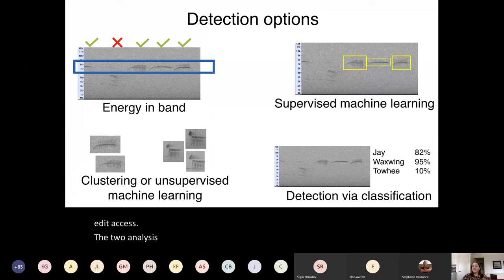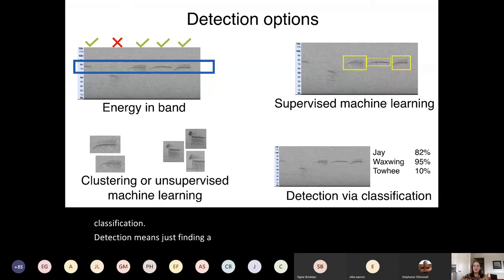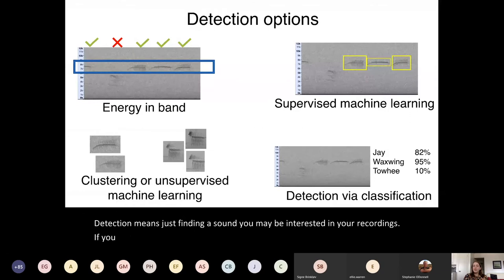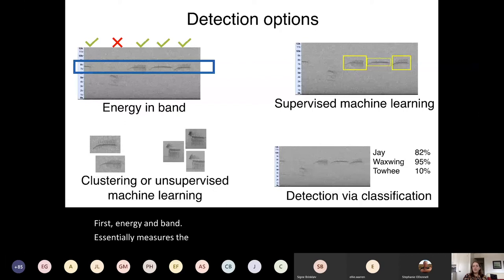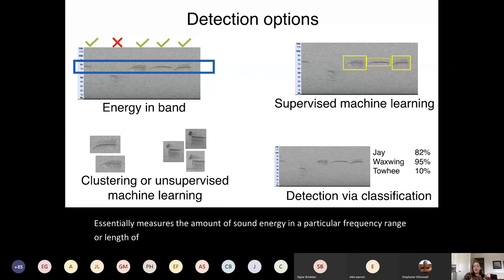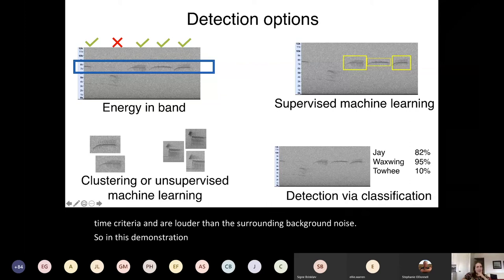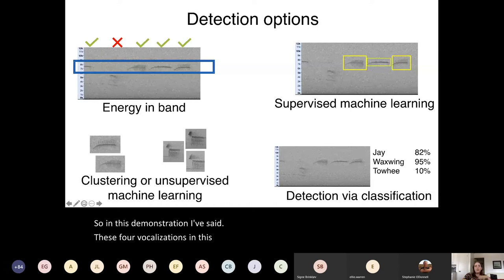The two analysis tasks people ask about most are detection and classification. Detection means finding a sound you may be interested in within your recordings. If you implemented auto-triggering, your detection step might be basically done. The most common methods of detection are these four: First, energy in band essentially measures the amount of sound energy in a particular frequency range or length of time, or both, to find vocalizations that match those frequency or time criteria and are louder than the surrounding background noise.